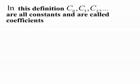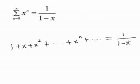In this definition, c0, c1, c2, and so on are all constants, and they are called the coefficients of the power series.